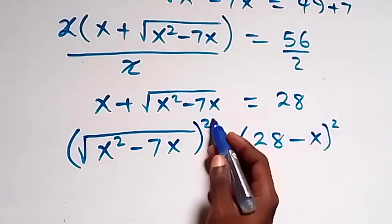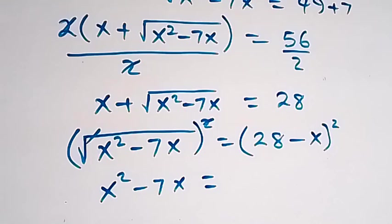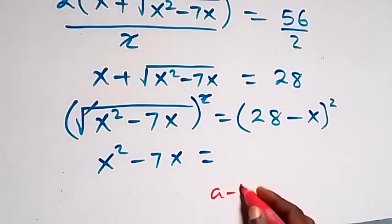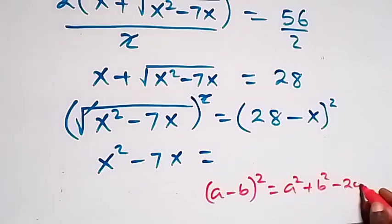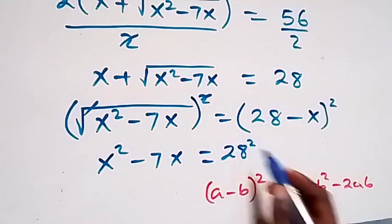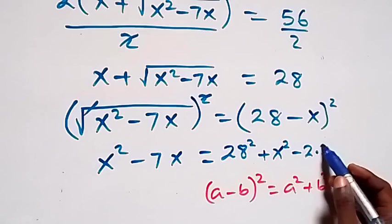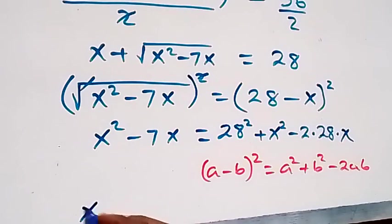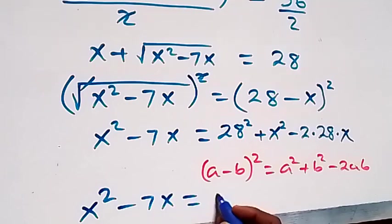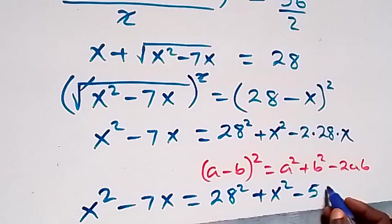Squaring cancels the square root on the left, giving x squared minus 7x. On the right, applying the expansion of a minus b squared, which is a squared minus 2ab plus b squared, with 28 as a and x as b, we get 28 squared plus x squared minus 2 times 28 times x, which is x squared minus 7x equals 28 squared plus x squared minus 56x.